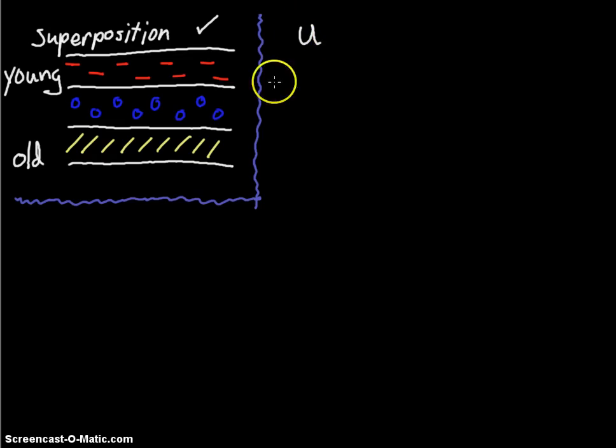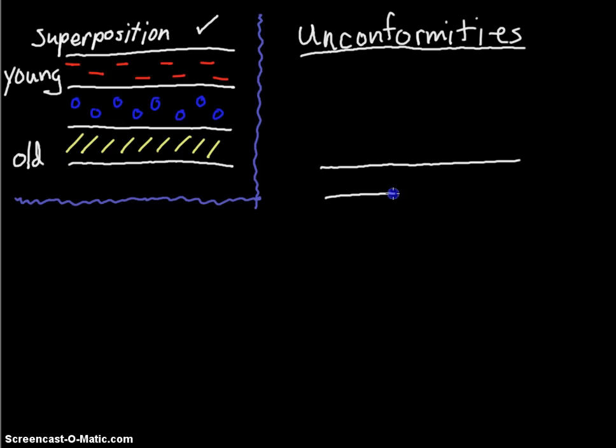So when there's changes to this position or missing pieces to these layers, these are called unconformities. I don't have my nice pad today so my writing is going to be a little bit messy. The first example is probably the most basic where I have some layers forming, and we have these layers over time.